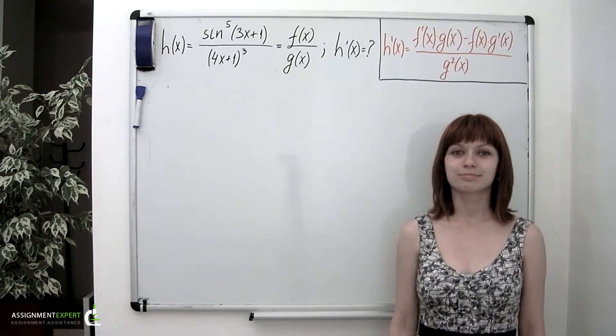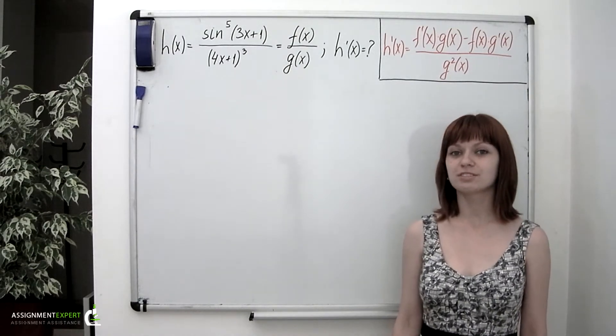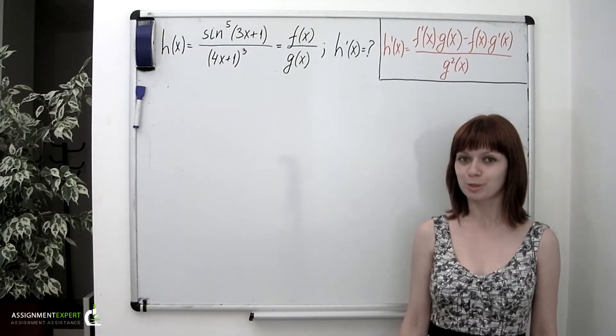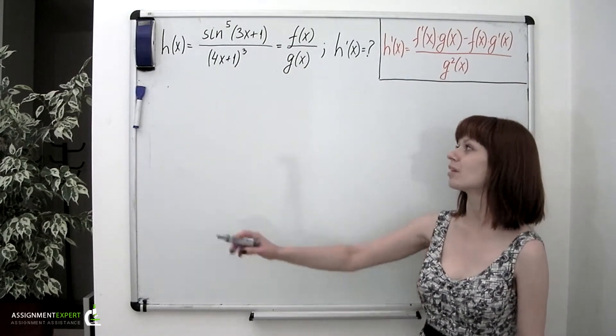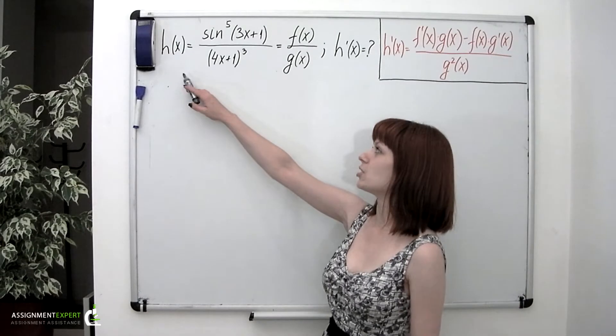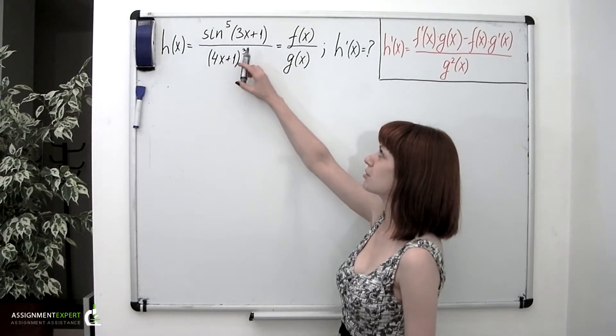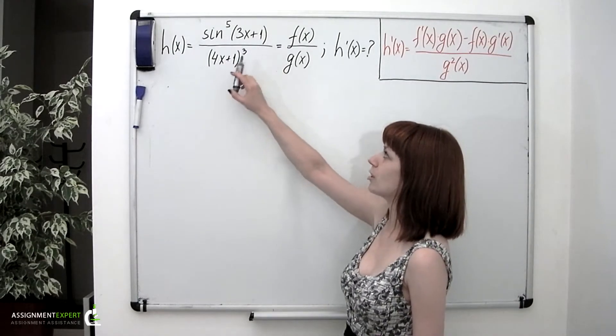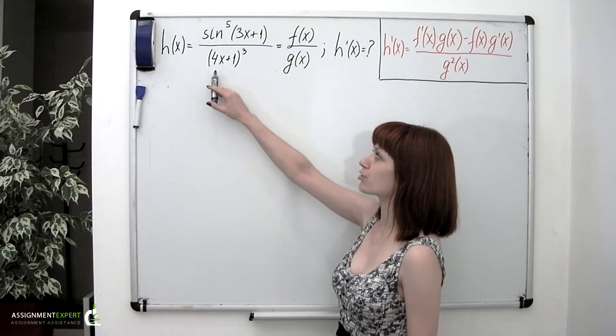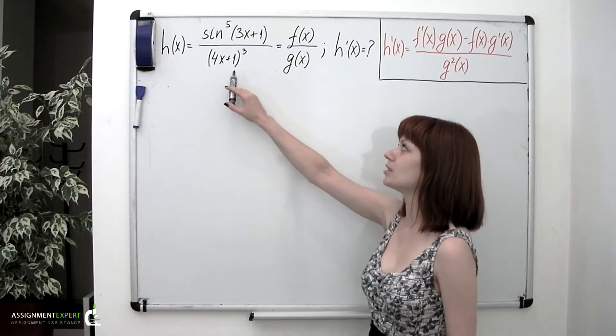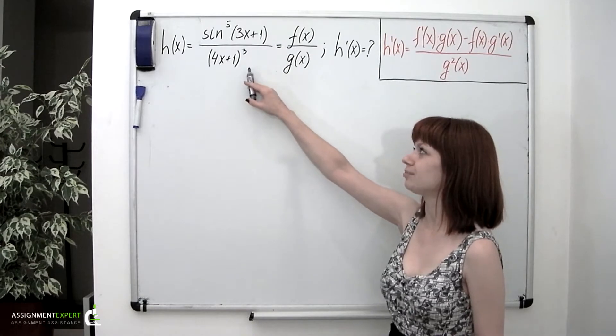Example 4. Let's find the derivative of the following function: H of x equals sine to the fifth of 3x plus 1, over 4x plus 1 to the third.